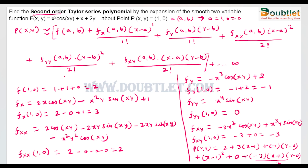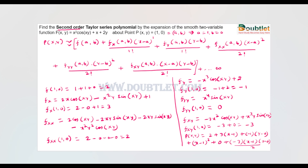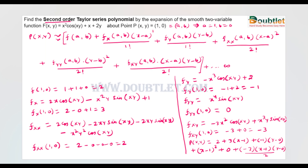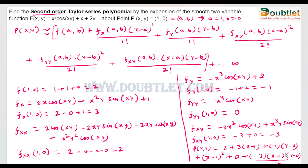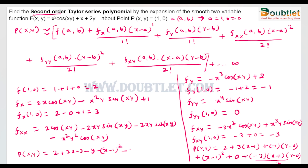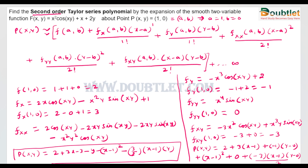Writing out the full polynomial, P(x, y) = 2 + 3(x − 1) − y + (x − 1)² − (3/2)(x − 1)y. This is the second-order Taylor polynomial of the given function at the given point, and this is our final answer.